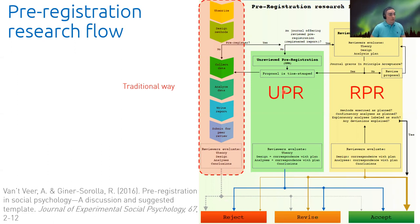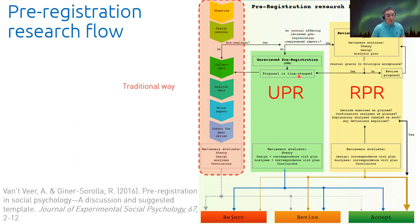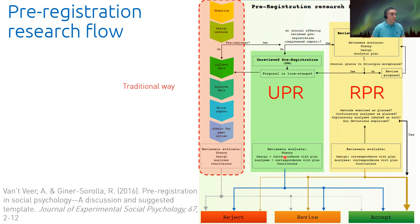There are two alternatives to the traditional approach: the unreviewed pre-registration and the reviewed pre-registration (RPR). In the unreviewed version, you theorize, design the methods, and then put your plan in a repository that is open to anyone and timestamped before proceeding to submit to a journal. In the reviewed version, you approach a journal that offers pre-registration and negotiate with them aspects like the theory, design, and analysis plan — you submit just those three things, with no data collection yet. Reviewers give you feedback to improve those sections.